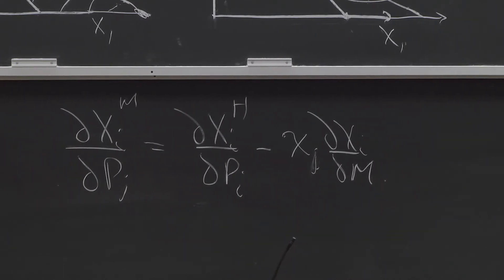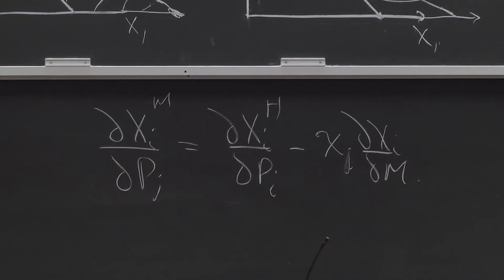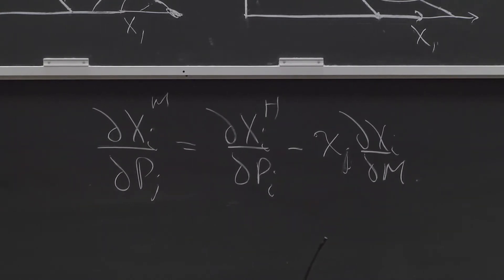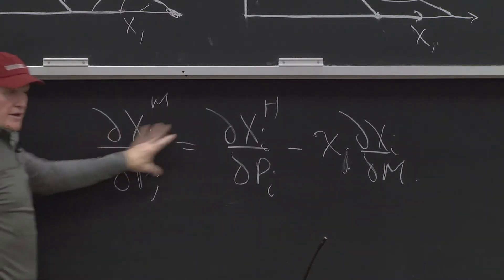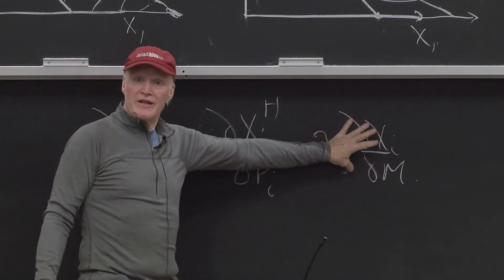Anybody understand that? I got a bunch of individuals. For each individual, I write down their Slutsky equation. Everybody's got their own terms, and this holds for each person in the economy.